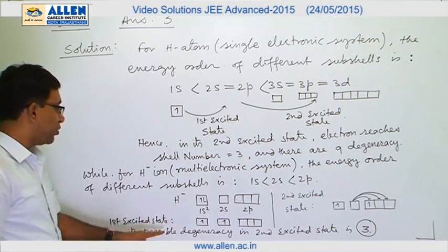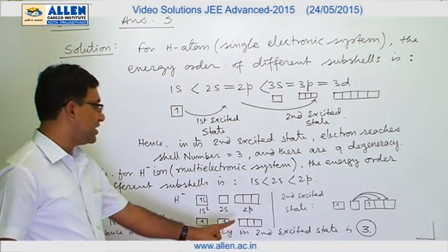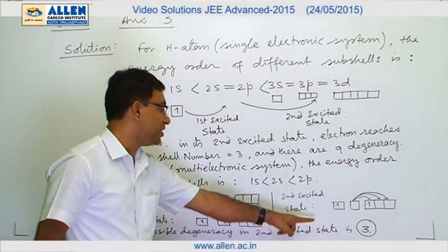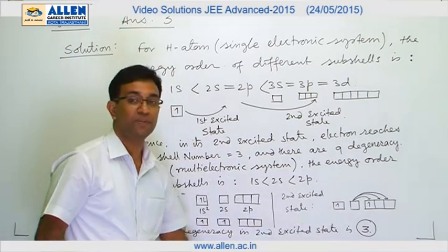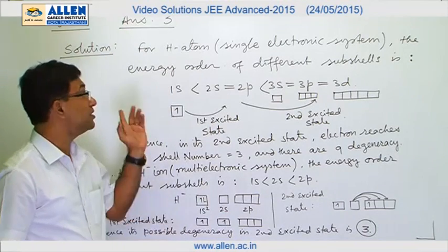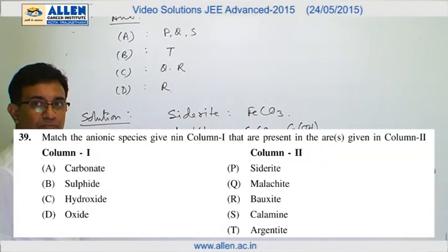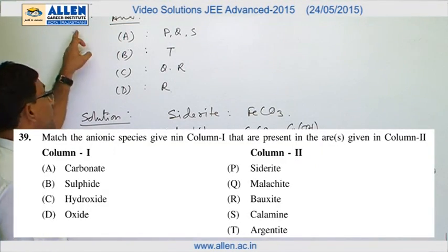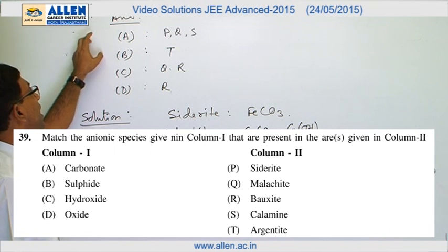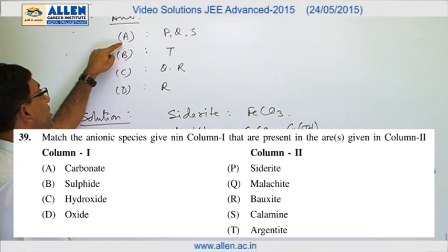In the second excited state, one electron from 2s jumps to 2p, and there are three possible degeneracies (corresponding to the three 2p sub-orbitals). Hence the possible degeneracy in the second excited state is three. The answer is 3.